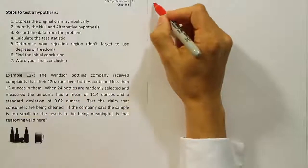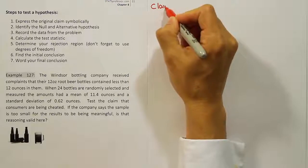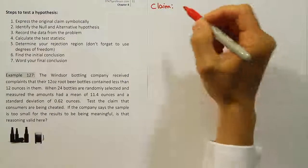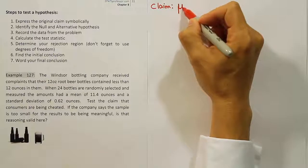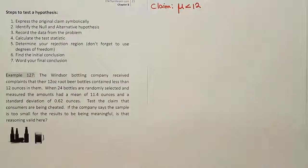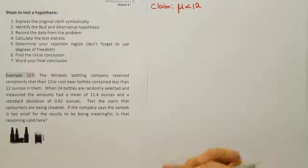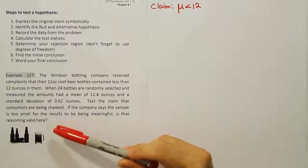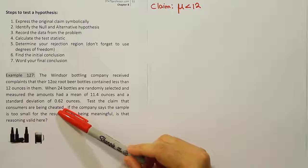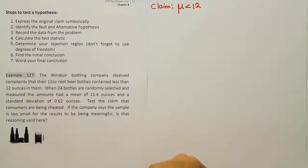So let's go ahead and write the claim down. The claim is going to be that the mean amount is less than 12 ounces in these root beer bottles. The reason why it's that as the claim is because we're trying to say that the consumers are being cheated, and to be cheated would mean to get less than what the bottle claims. The bottle says 12 ounces, but in this case, it seems they're getting less than 12 ounces of soda.